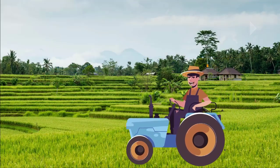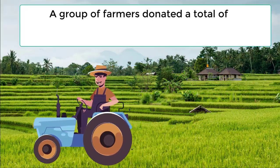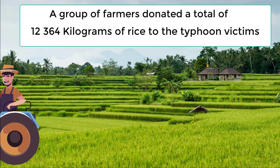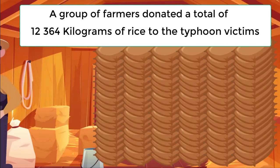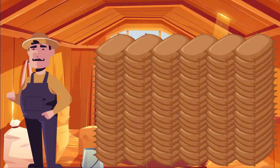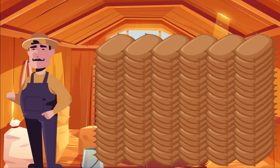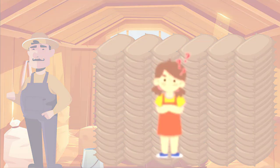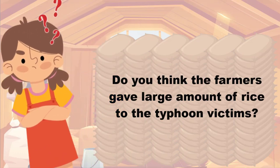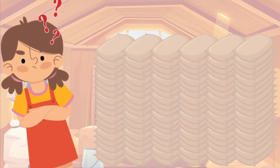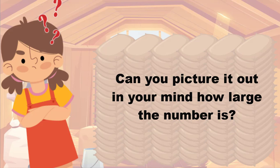But before that, try to look at this situation. A group of farmers donated a total of 12,364 kilograms of rice to the typhoon victims. Can you imagine how big the number 12,364 is? Based on what we have read, do you think that the farmers gave large amount of rice to the typhoon victims? Can you picture it out in your mind how large the number is?